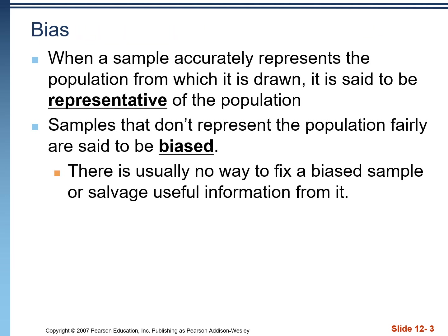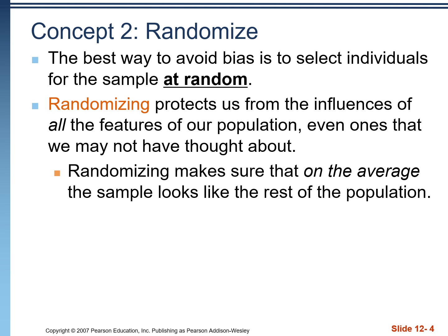When a sample accurately represents the population, it's said to be representative. If it's not, we use the term biased. There's usually no way to fix a biased sample, so we have to be careful when we collect our data. The number one most important thing when trying to create an unbiased representative sample is that we need to select individuals at random. Randomization is absolutely essential in every accurate, valid sampling method.